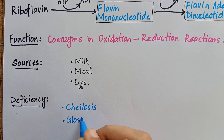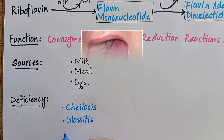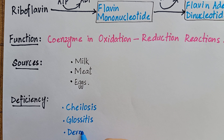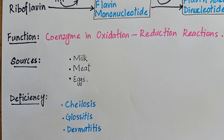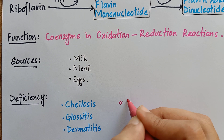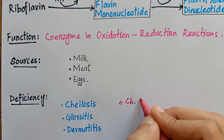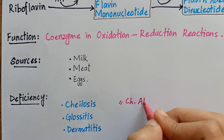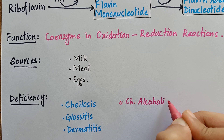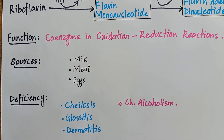Glossitis, which means the tongue appearing smooth and purplish, and dermatitis. Although its deficiency is uncommon, it is mostly seen along with other vitamin deficiencies. Chronic alcoholics are susceptible to vitamin B2 deficiency.